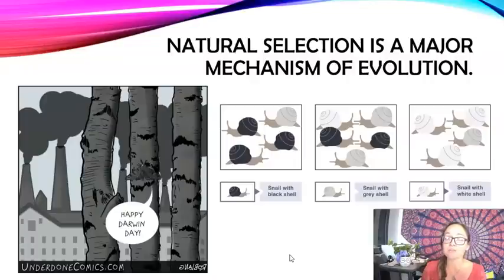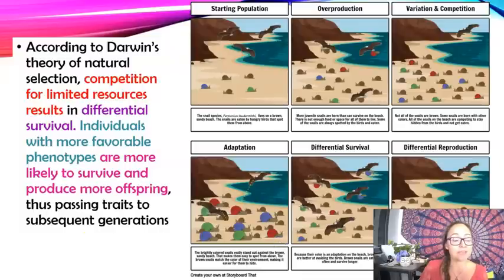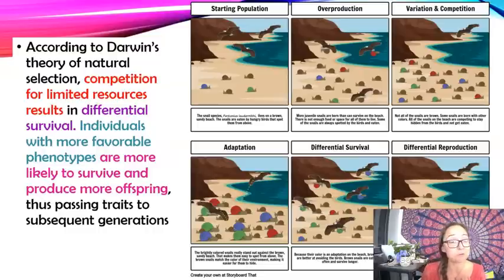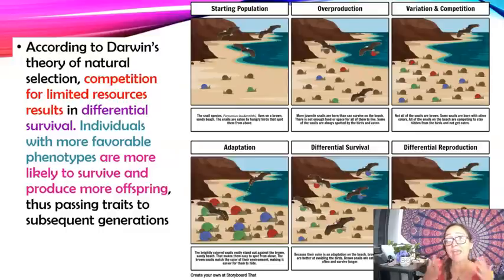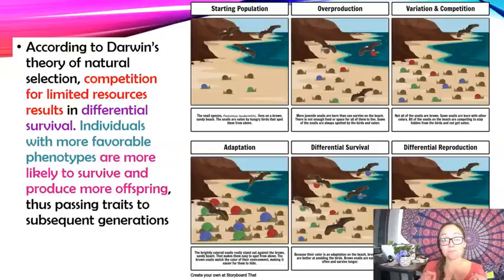The other mechanisms are gene flow, non-random mating or sexual selection, genetic drift, and mutations. Natural selection is based on Darwin's theory, which states there's competition for limited resources, resulting in differential survival — some individuals survive better than others. Those with favorable phenotypes are more likely to survive and reproduce, passing their traits to subsequent generations. It's not equal; some phenotypes are better at surviving and reproducing.